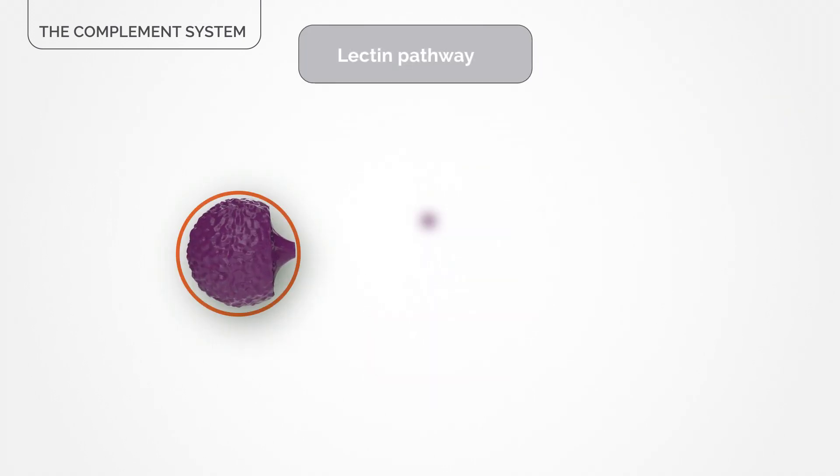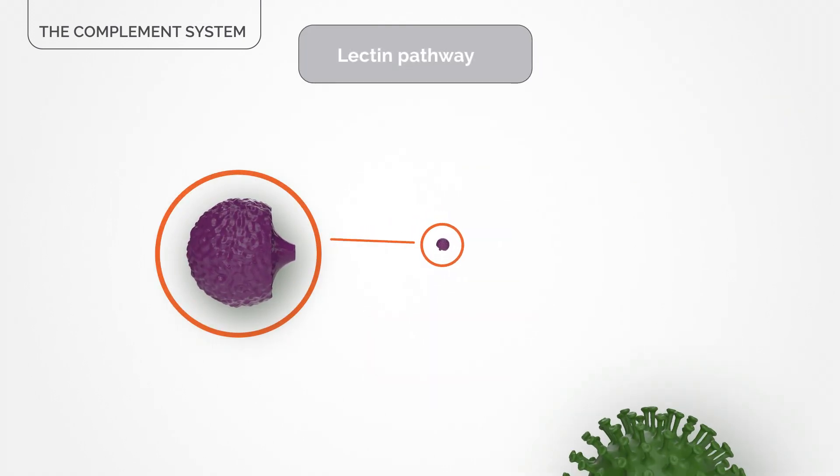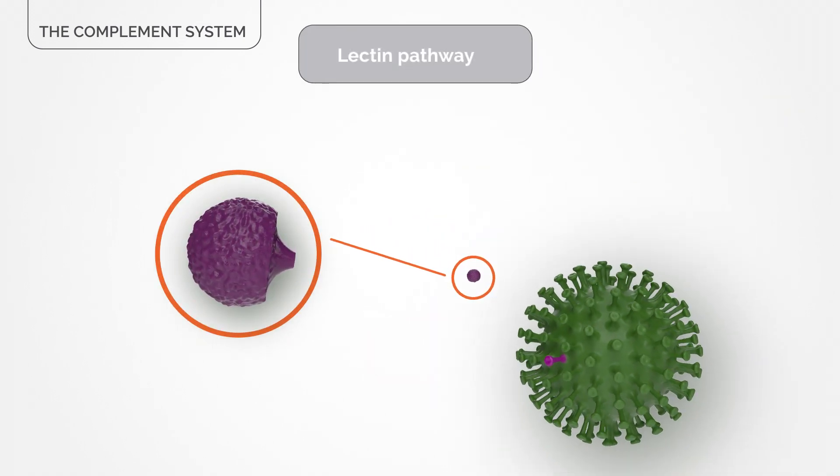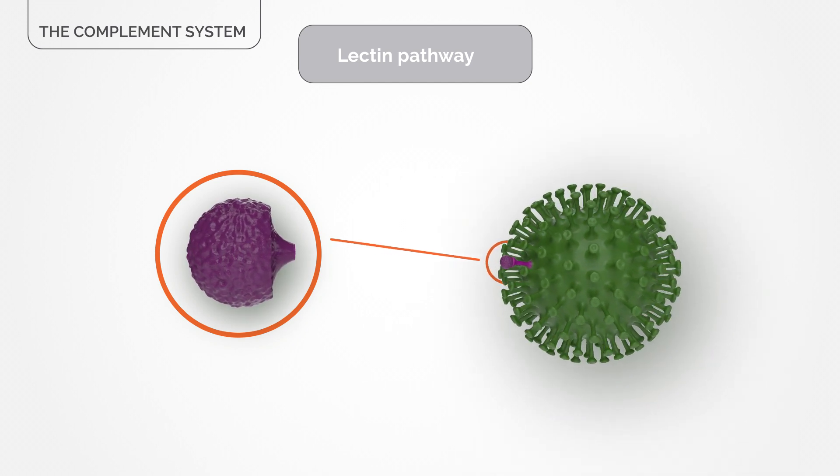The lectin pathway is activated by natural molecules in our body that recognize sugars at the surface of infectious organisms.